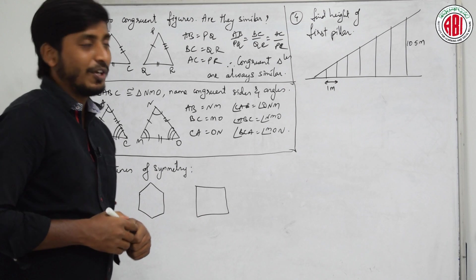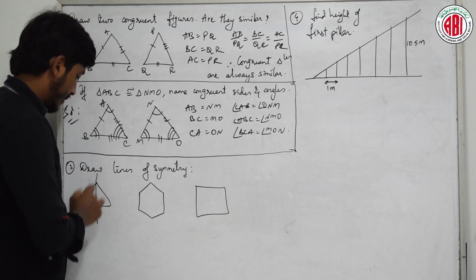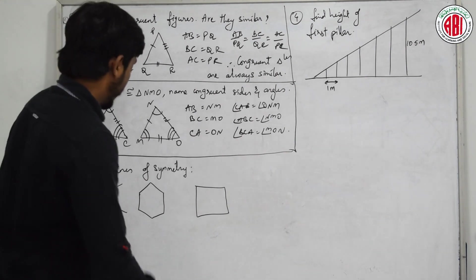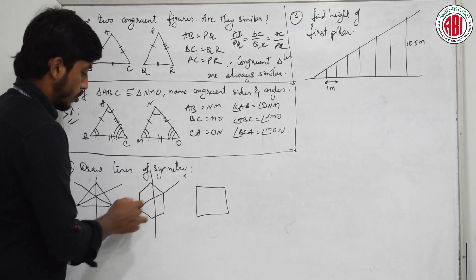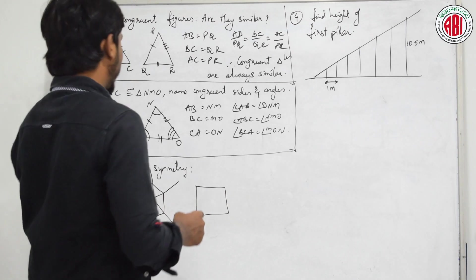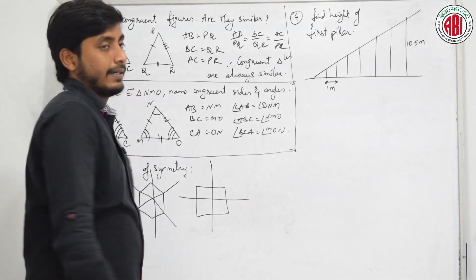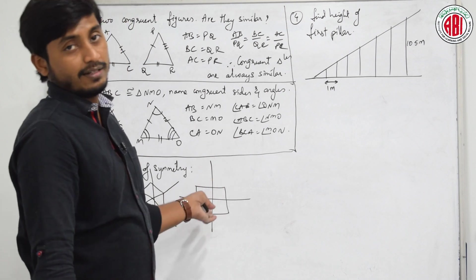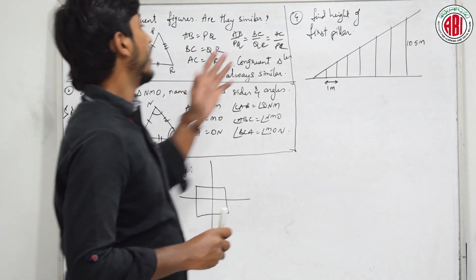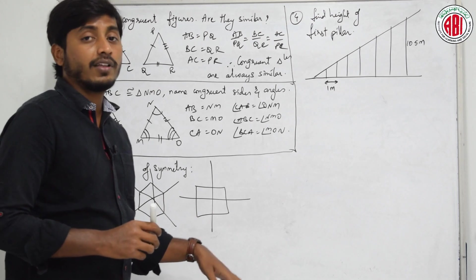He is asking us to draw the lines of symmetry. You know very well how to draw them. You can draw through a side or through a point. For one shape there can be one line, one more line, and one more line - three lines total. Draw them properly in your book. You can draw symmetry lines through points or through sides in the same direction.